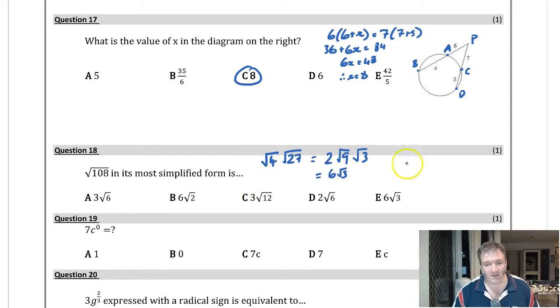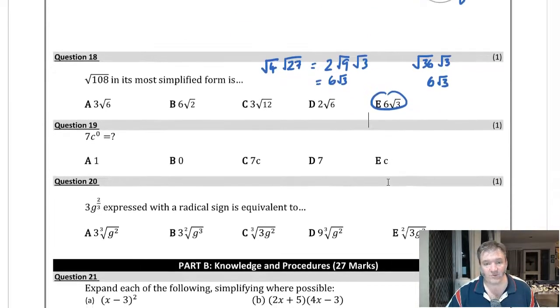Can you do that any faster? Yes, of course you can. Root 108 is root 36 multiplied by root 3, and you could get straight to the answer that way. Root 36 is 6, so it would be 6 root 3. Two to go, and we've finished the multi-choice questions.